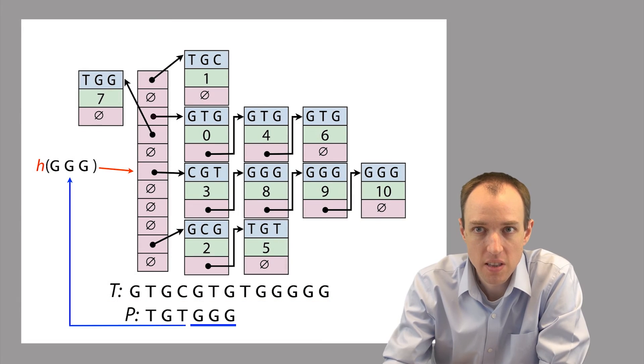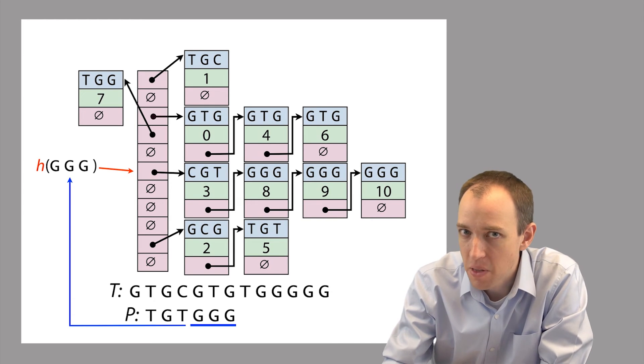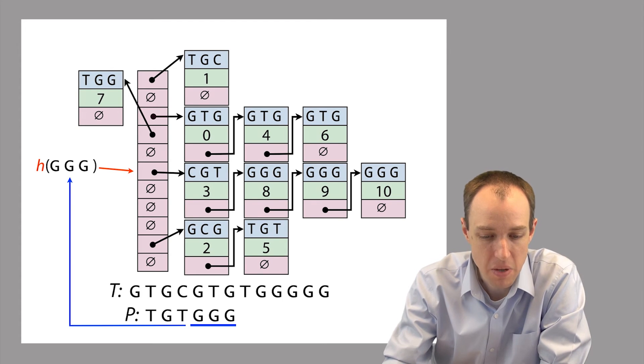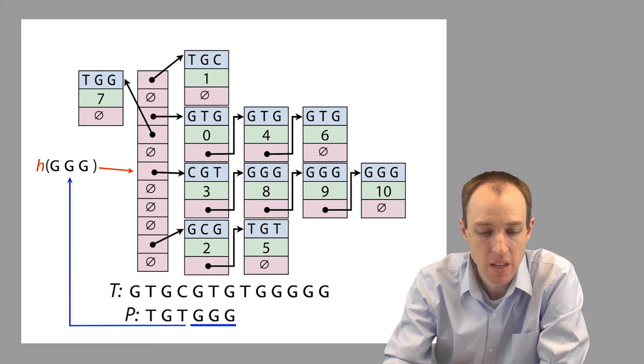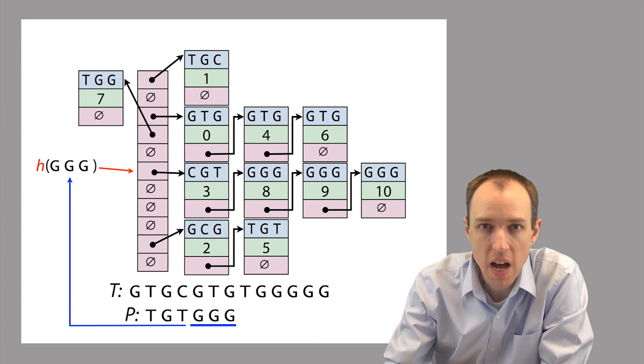Now say that we want to query this hash table. We want to query this index. So let's say we have our pattern P here. And we're going to extract some 3mer from this pattern. It doesn't have to be the first one. It could be, it doesn't matter which of the 3mers we pick. Because when we built our index, we used all of the 3mers from the text T. So let's just go ahead and pick this one, this GGG, this triple G. And we want the index to tell us all the offsets where triple G occurs within the text T.